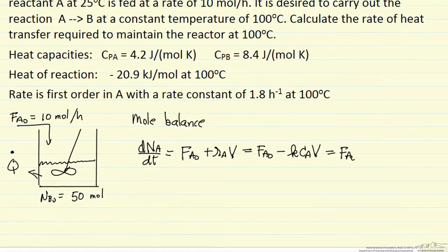It turns out to be convenient in this case, CA times V is the number of moles of A, so we have an equation that's just in the number of moles of A in time, which means we can separate variables and integrate this analytically.